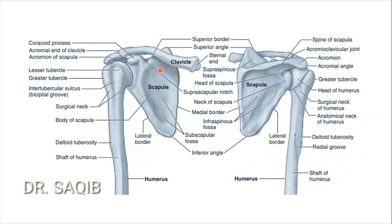This is the anterior view showing the scapula, clavicle, and the humerus — I discussed some detail in my video on the shoulder joint. This is the posterior view. This is the glenohumeral joint, and this is the clavicle making the acromioclavicular joint here.